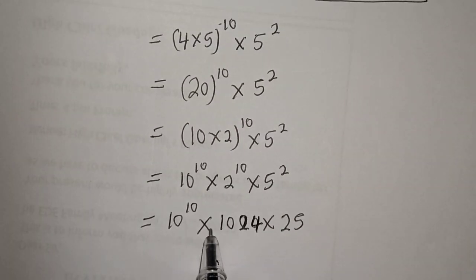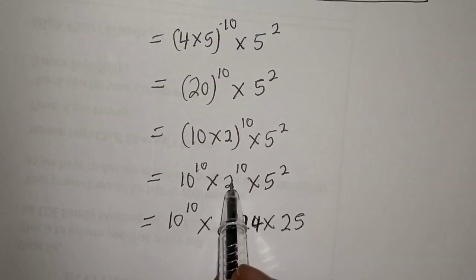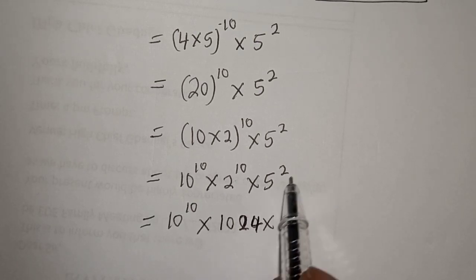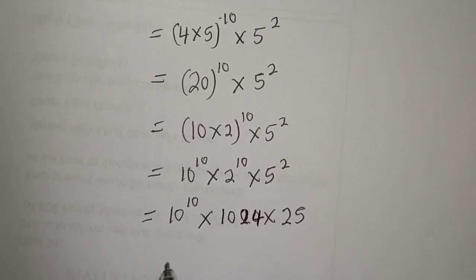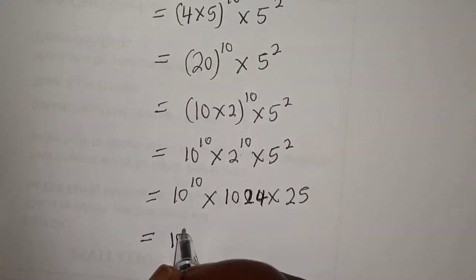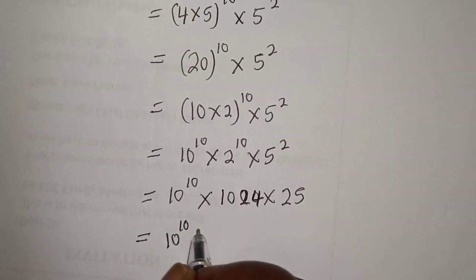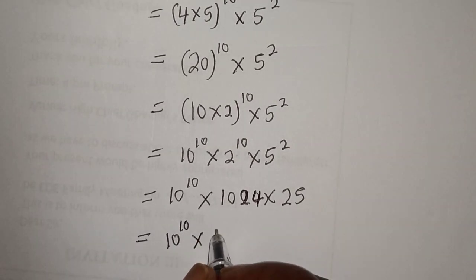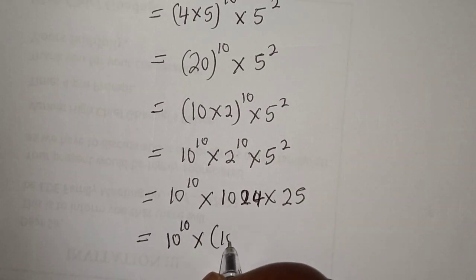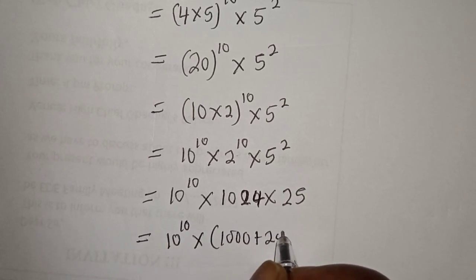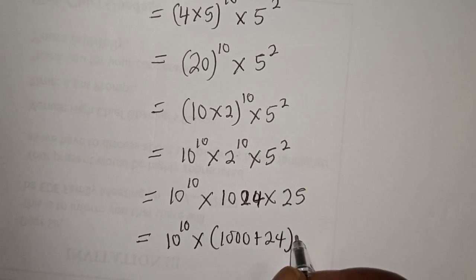10 raised to power 10, multiplied by 2 raised to power 10 multiplied by 5 squared. Note that 5 squared is 25.